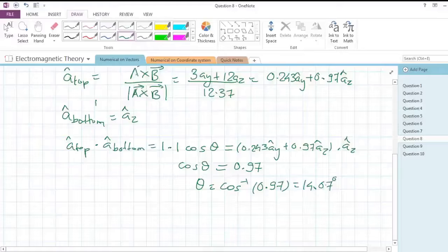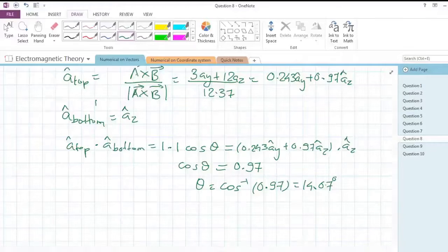So this much tilt is there on the top of this wooden block. That is all. We have solved two questions. These two questions will help you understand why we find dot product and why we find cross product. Hope you understood everything, thank you.